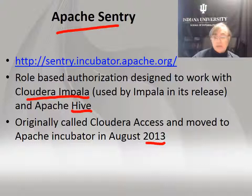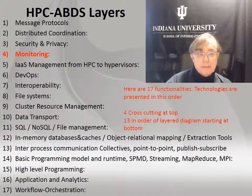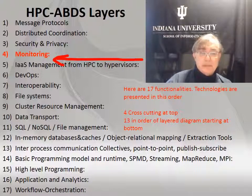Sentry is another role-based system. It came from Cloudera's Impala system and is used by Impala and Hive. It was moved to Apache in August 2013. This lecture was given in October 2014. Whether this will take off — like a lot of Apache systems, especially those donated by companies — is uncertain, since multiple things are donated with overlapping capabilities. But at least this points out there is an Apache role-based authorization system.